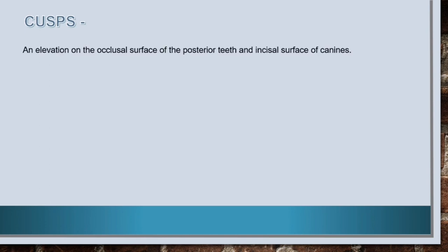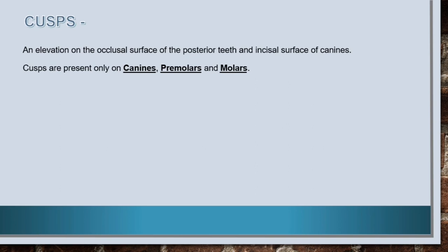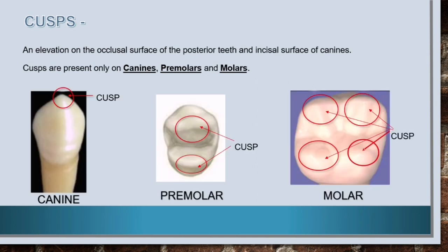First let's know about cusp. A cusp is an elevation on the occlusal surface of the posterior teeth and incisal surface of canines. Cusps are present only on canines, premolars and molars. Canines, also known as cuspids, possess a single cusp, while premolars known as bicuspids possess two cusps, and molars normally possess either four or five cusps.